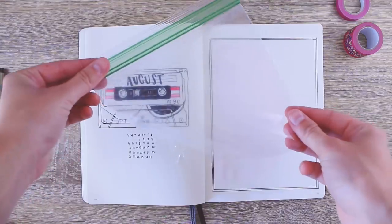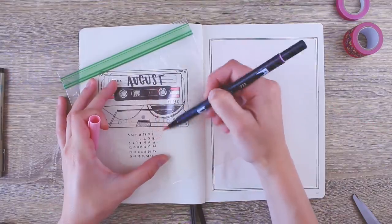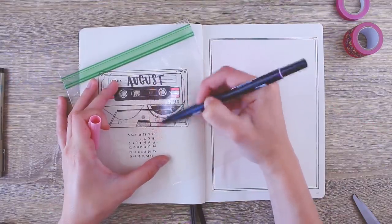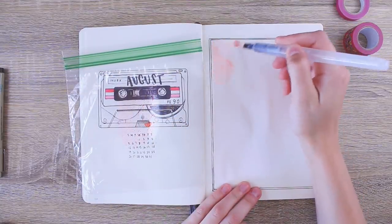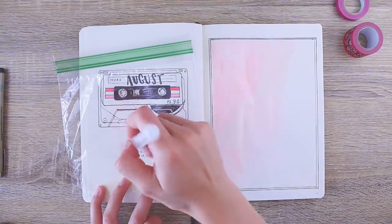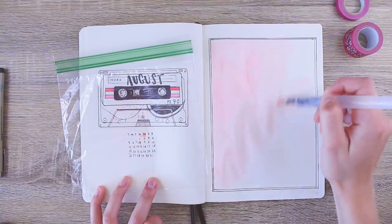So I started over and instead I just took a little plastic bag and I colored on it with the marker, and then it leaves behind a little bit of the pigment. Then I picked that up with a water brush and just spread it around instead of trying to color directly onto the paper, and it worked so much better.